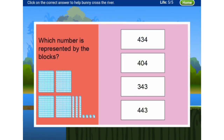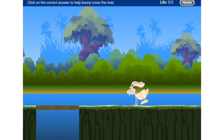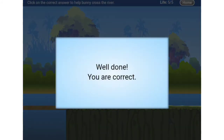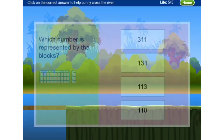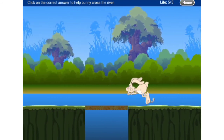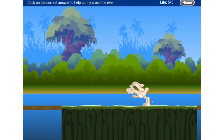Which number is represented by the blocks? Count the blocks: ones blocks are four, tens blocks are three, hundreds blocks are four. So the answer is four hundred thirty-four — 434. Then the next question: ones are three, tens are one, hundreds are one — so the answer is one hundred thirteen — 113. The bunny crossed the bridge both times.